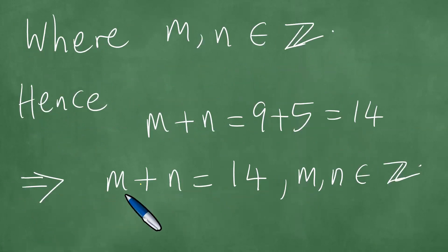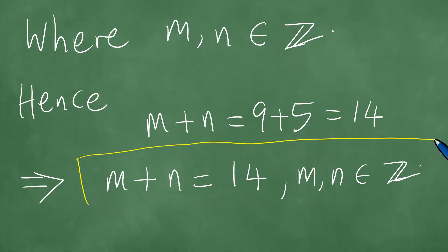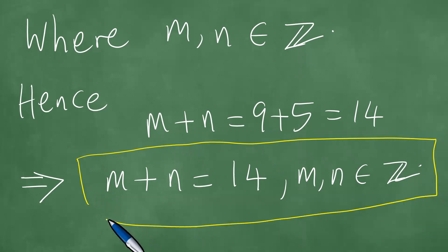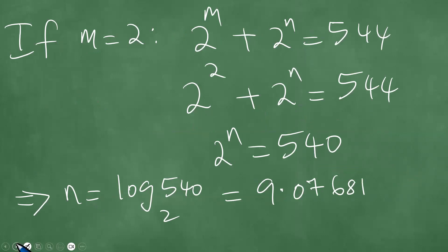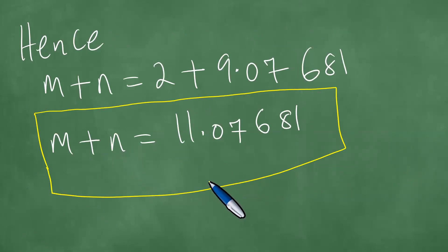So we have achieved the sum. For integer values, M plus N is 14. But also, M plus N is 11.07681 when M equals 2.